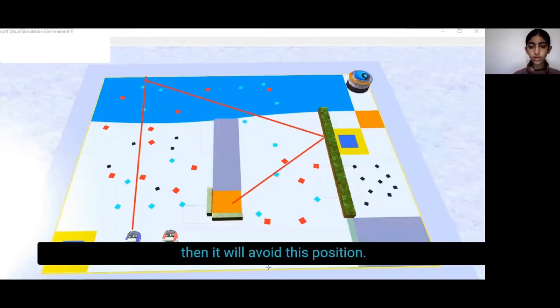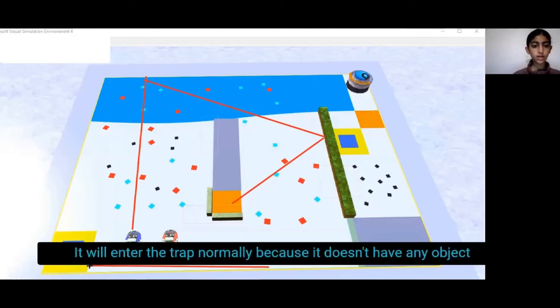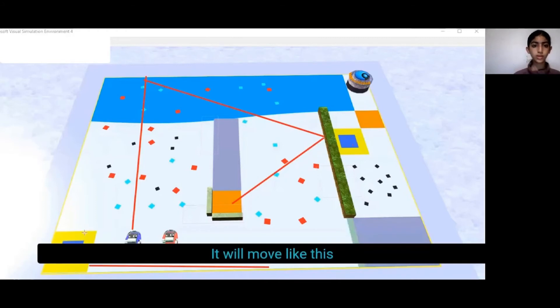Then it will avoid this position. It will enter the trap normally because it doesn't have any objects. It will move like this.